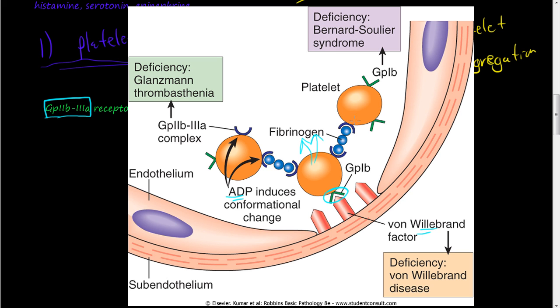And then now they start accumulating, and then this fibrinogen is changed to fibrin through the molecule thrombin. And we'll talk about that in the coagulation cascade.